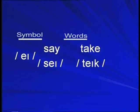Diphthong number 13 begins with E and ends with I. We find this vowel in words like say, take, tail. The first letter of the English alphabet is said as A. Say these words after me: Say. Take. Tail. A. Correct.